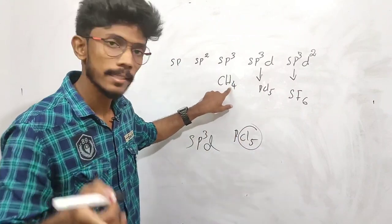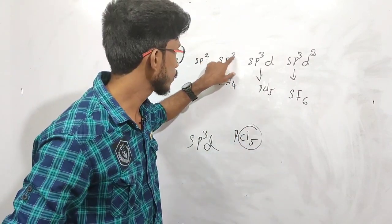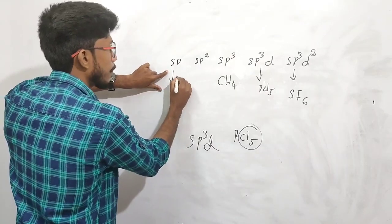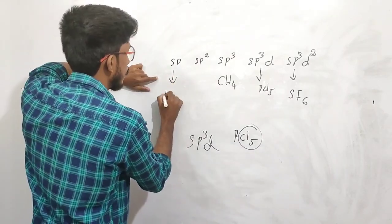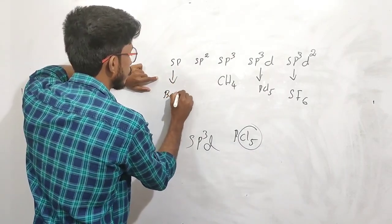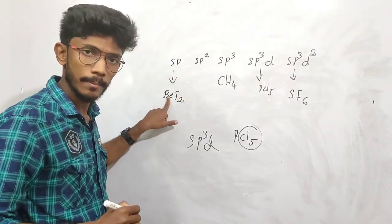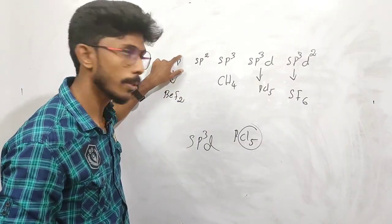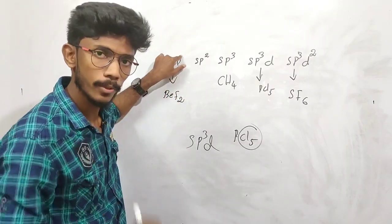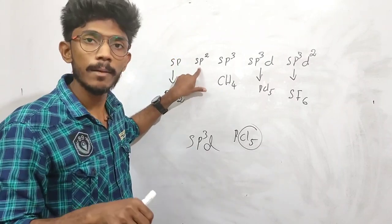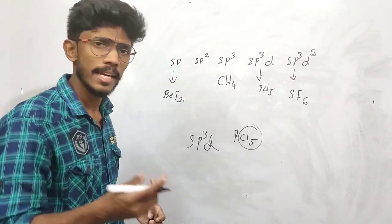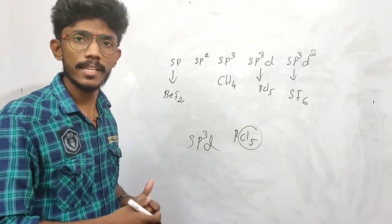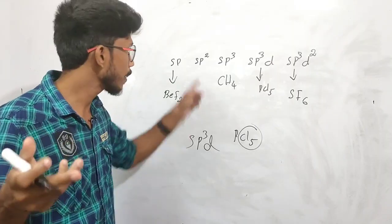Central atom is carbon, with 4 bonds — 1s, 3P, total 4 — giving SP3 hybridization. BF2: central atom is beryllium, with 2 bonds and 1P. SP2 example: SP2. Then we have NH3 and BF3.